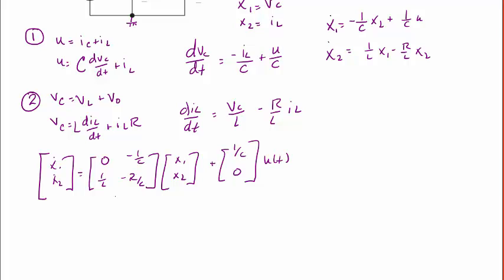And this equals [0, negative 1 over C; 1 over L, negative R over L] multiplied by the vector [x1; x2] plus [1 over C; 0] times u. And our output variable y is equal to [0, R] times [x1; x2]. So this means that our A matrix is [0, negative 1 over C; 1 over L, negative R over L].